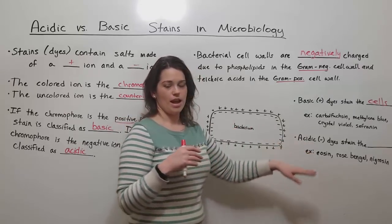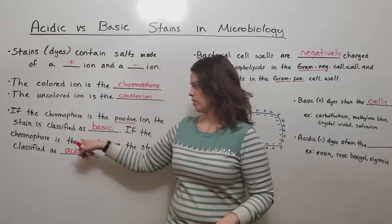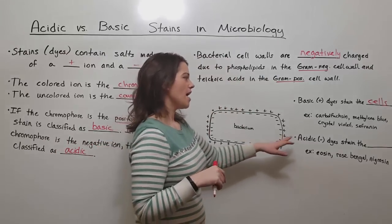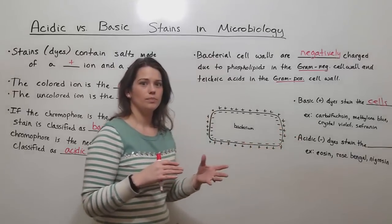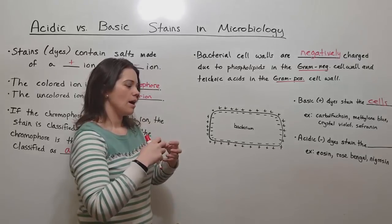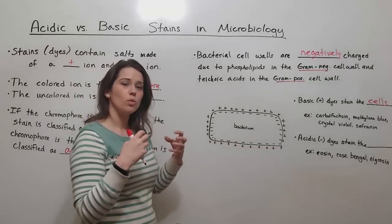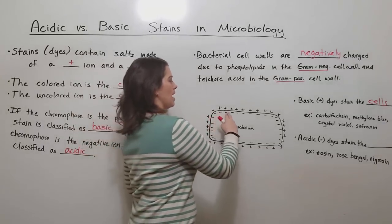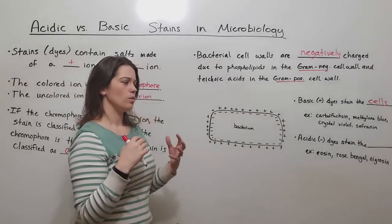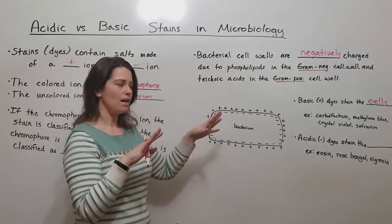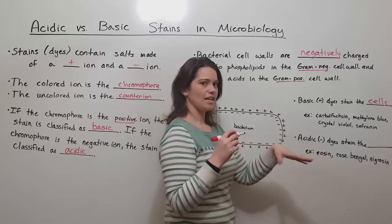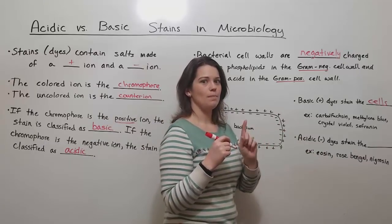Acidic dyes, on the other hand - the acidic dyes are the ones where the colored ion is negatively charged. They actually don't stain the cells because the negatively charged chromophore will be pushed away, will be opposed by the negative charges in the bacterial cell. So the negative charges in the bacterial cell wall will repel this acidic dye. And so acidic dyes will stain not the cells, but will stain the background.